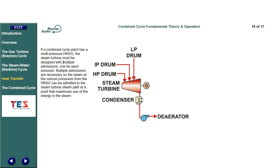If a combined cycle plant has a multi-pressure HRSG, the steam turbine must be designed with multiple admissions — one for each pressure. Multiple admissions are necessary so the steam at various pressures from the HRSG can be admitted to the steam turbine steam path at a point that maximizes use of the energy in the steam.